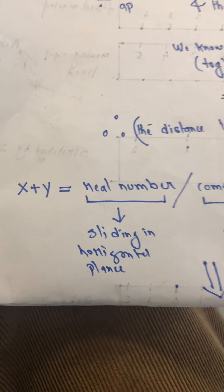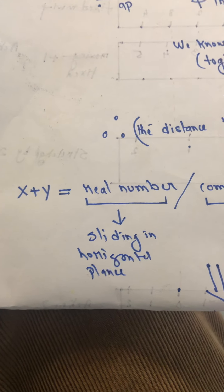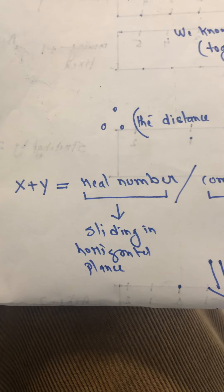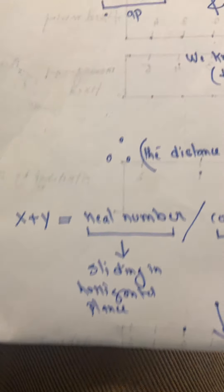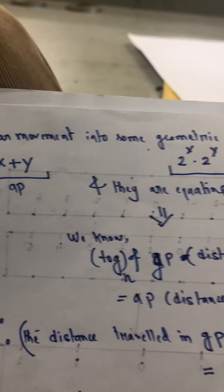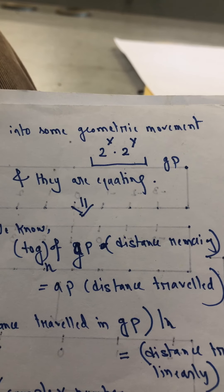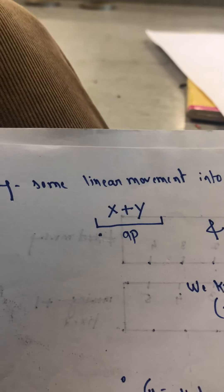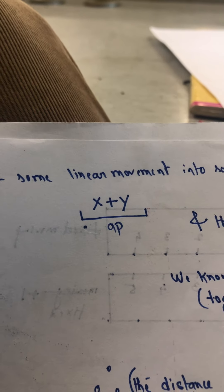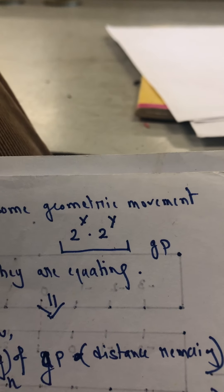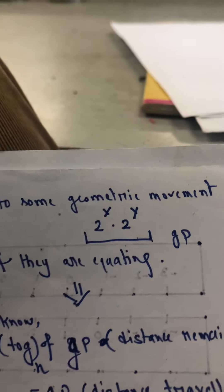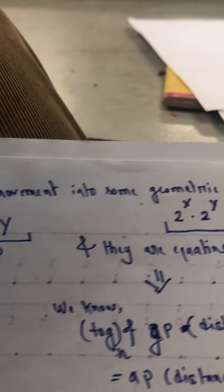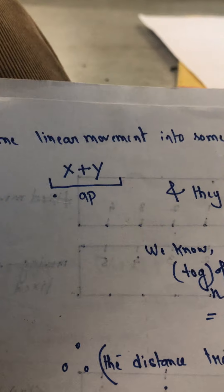Let's start from where we ended in the last video because of the sudden problem with the camera. This is what I was referring to: 2 to the power x into 2 to the power y is equal to 2 to the power x plus y. And x plus y is an additive input — an arithmetic progression — and this is some sort of geometric progression and multiplicative output. So addition and multiplication are related in terms of this law as well.